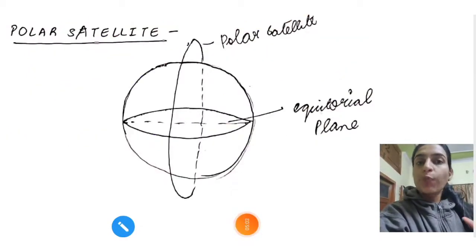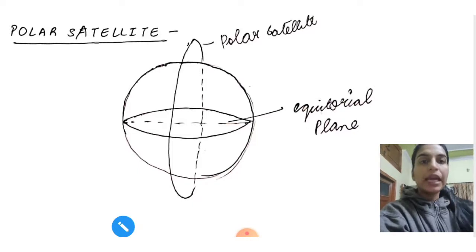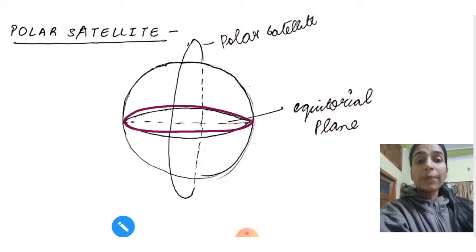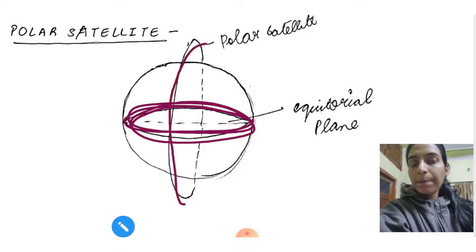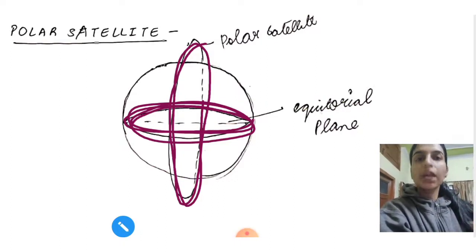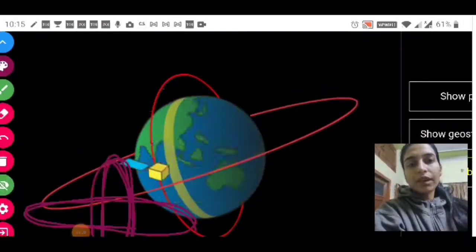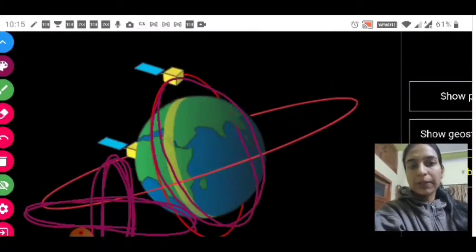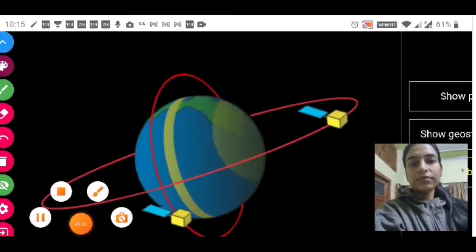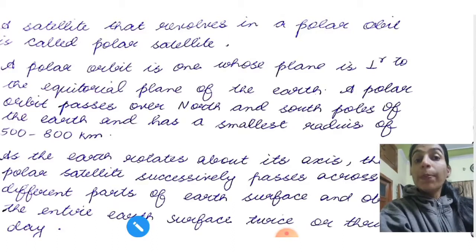The next type of satellite is polar satellite. Again, its orbit will be perpendicular to the equatorial plane. This is your equatorial plane. The earth's rotation was happening in this way. So if perpendicular to that orbit, in this way, a satellite is revolving. Then such a satellite we call polar satellite. Basically what I'm showing you, like this. This one. This is your polar satellite. So satellite that revolves in a polar orbit is called polar satellite. A polar orbit is one whose plane is perpendicular to the equatorial plane of the earth. A polar orbit passes over north and south poles of the earth.